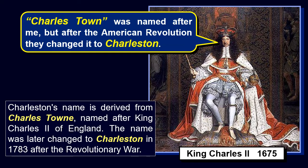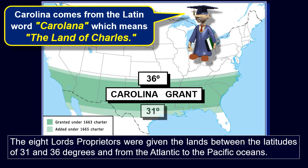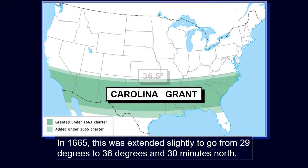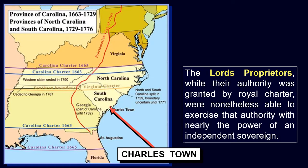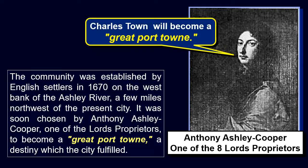The name was later changed to Charleston in 1783 after the Revolutionary War. The eight Lords' Proprietors were given the lands between the latitudes of 31 and 36 degrees and from the Atlantic to the Pacific Oceans. In 1665, this was extended to go from 29 degrees to 36 degrees and 30 minutes north. While their authority was granted by Royal Charter, they were able to exercise it with nearly the power of an independent sovereign. The community was established by English settlers in 1670 on the west bank of the Ashley River, soon chosen by Anthony Ashley Cooper, one of the Lords' Proprietors, to become a great port town.